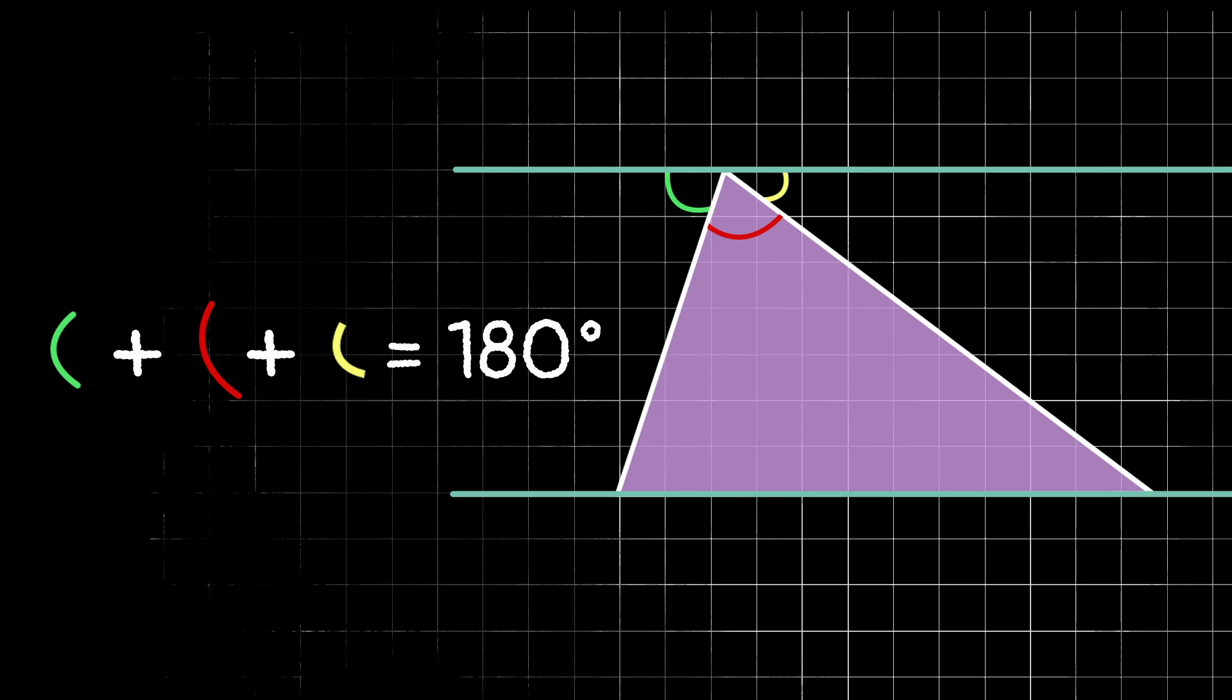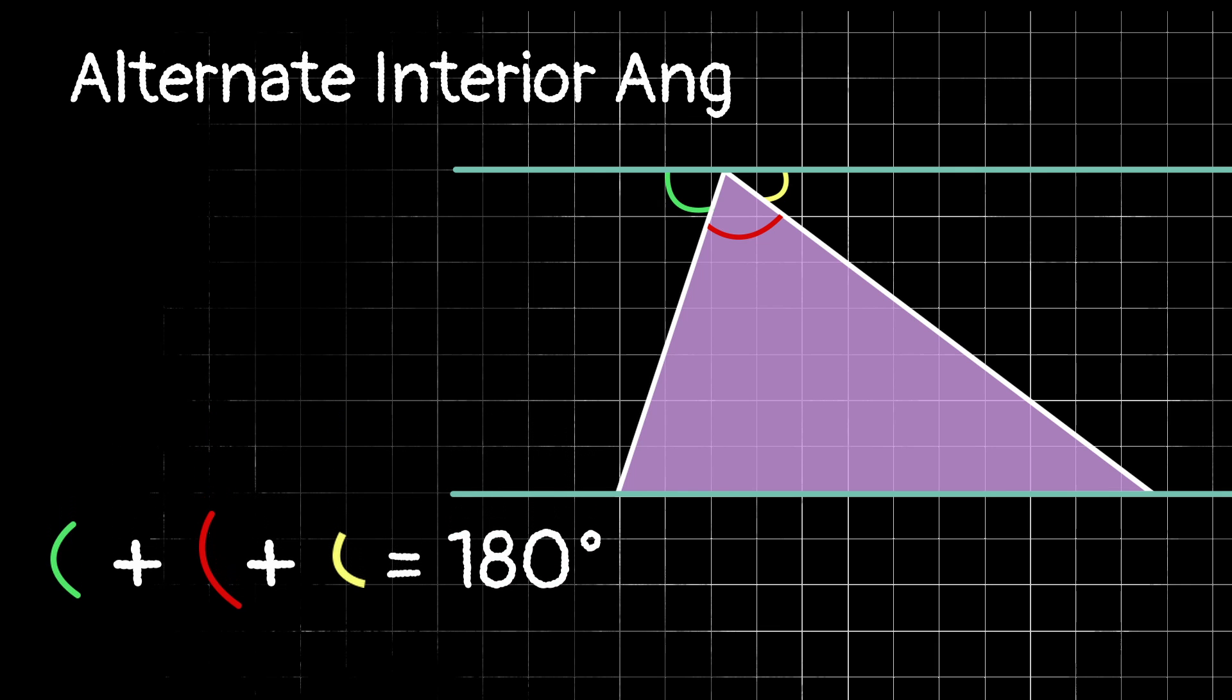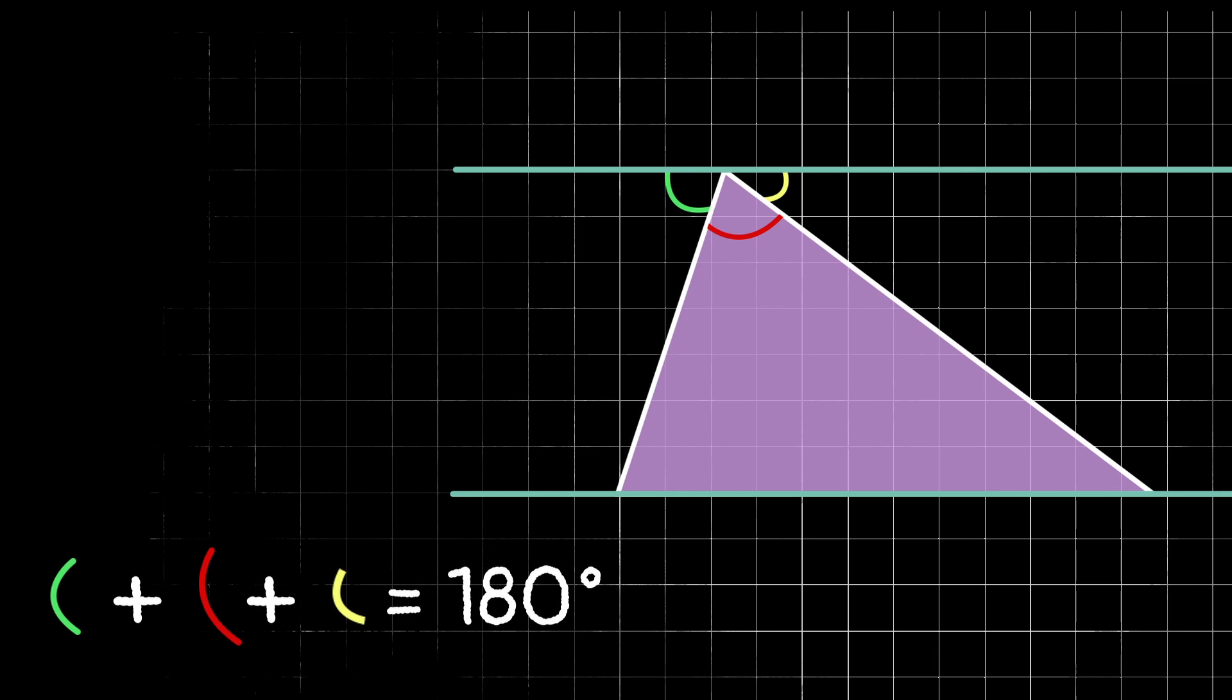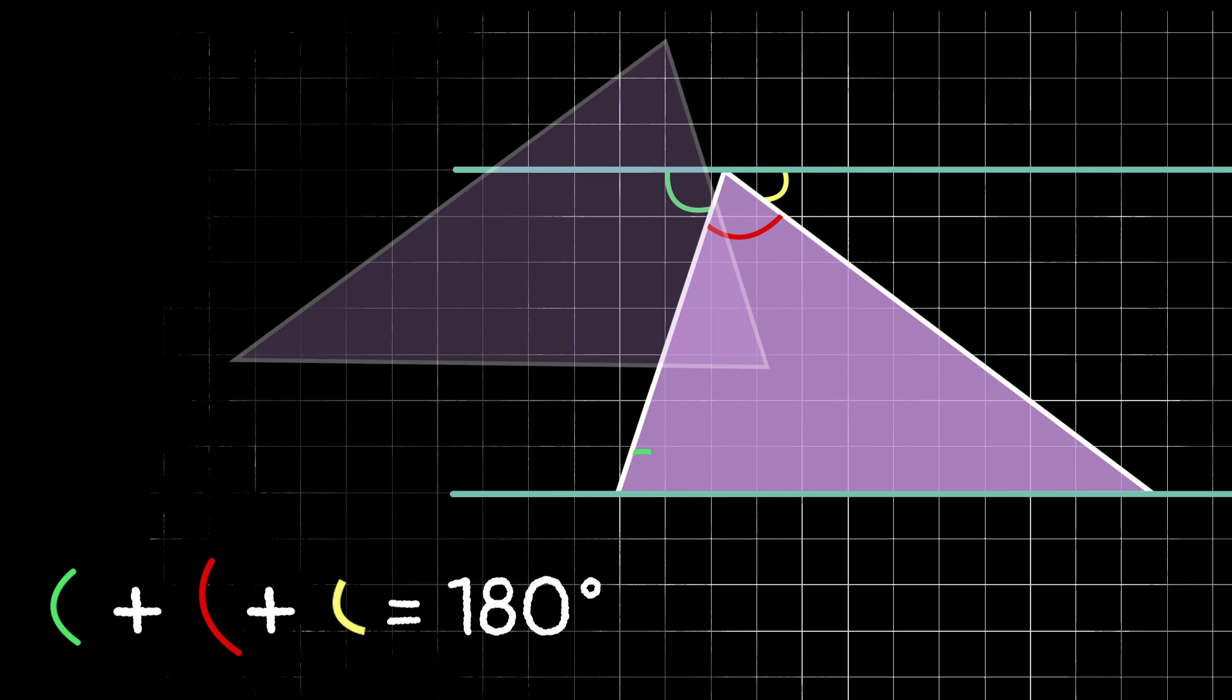But if you also recall the idea of alternate interior angles, which if you would like a further explanation in a video on that, let me know, we know that this green angle and this bottom left angle of our triangle will have the same measure.